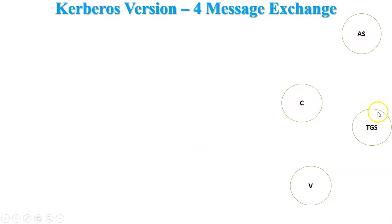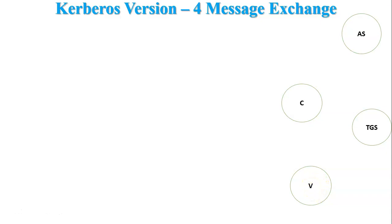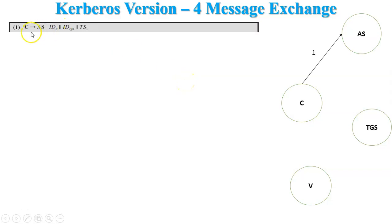Now, how does the Kerberos version 4 message exchange work in detail? There is a client, an authentication server, a ticket granting server (TGS), and V which is the application server. The client wants to access services from the application server. In the first step, the client goes to the authentication server and requests a TGS ticket, sending ID_TGS.